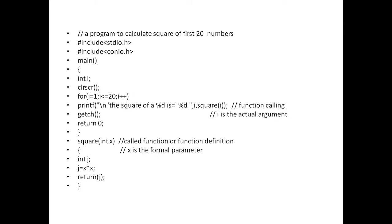This is the function definition. Int j, j = x * x, curly braces close. This is the function definition. Whenever return j is written, automatically the control will move to the place where the function is calling. Automatically the control will move to the main program or the function calling location, square.